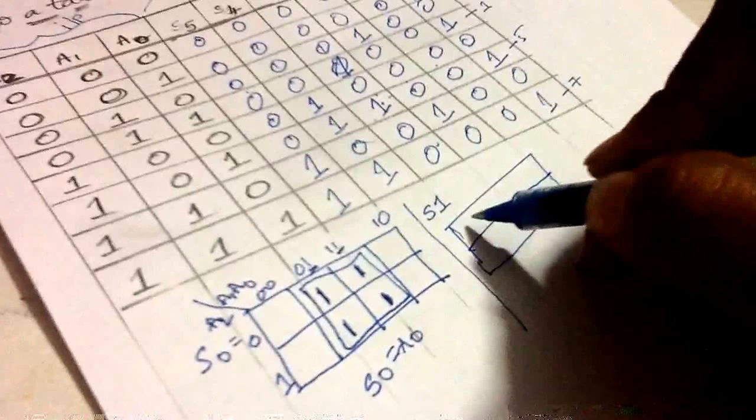Now let's draw a diagram of all this in a new paper. Let's write the equations: S0 equals A0, S1 equals 0, S2 equals A1 A0 bar, S3 equals A0 into A1 bar, S4 equals A2 into A1 bar plus A0, S5 equals A2 A1.